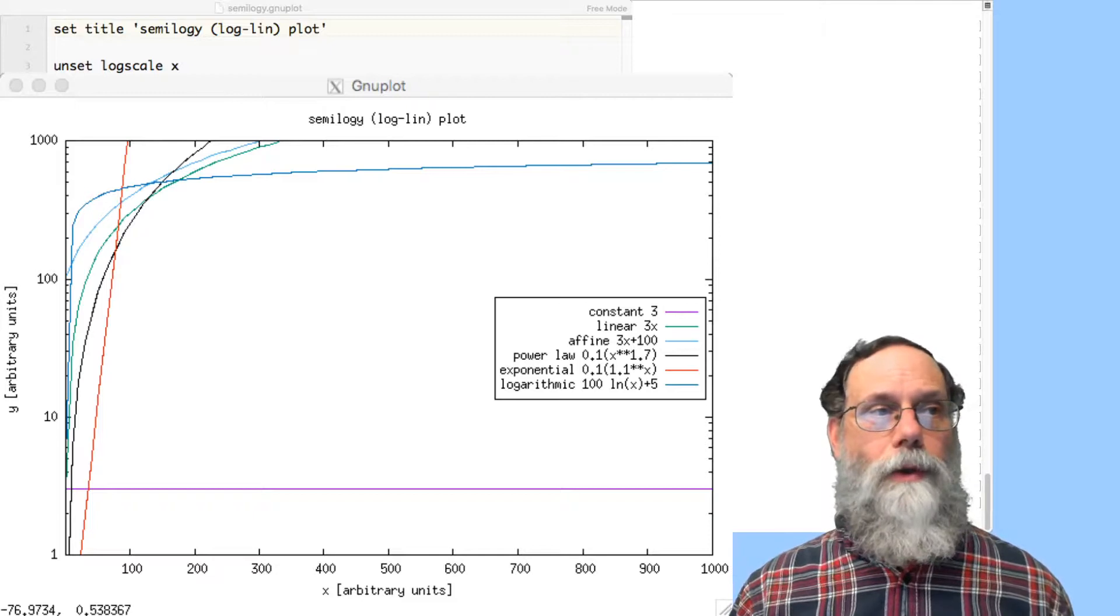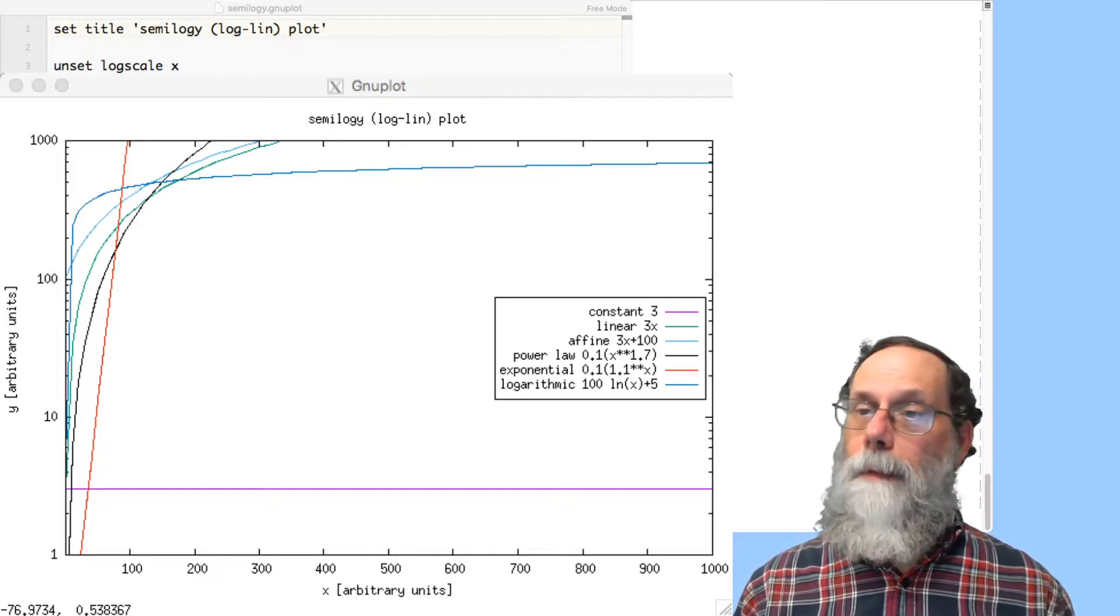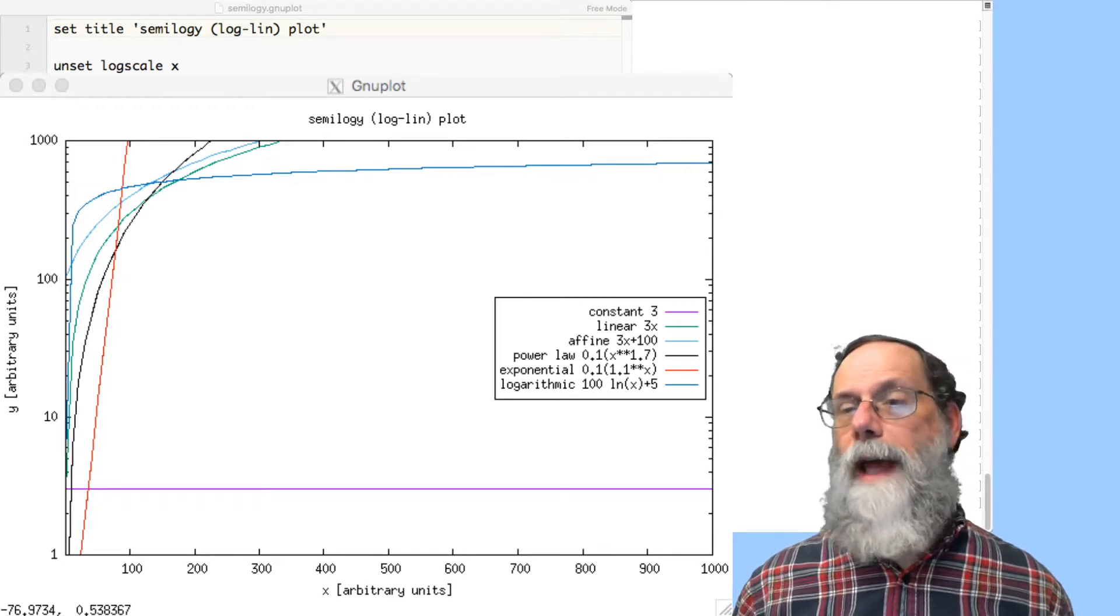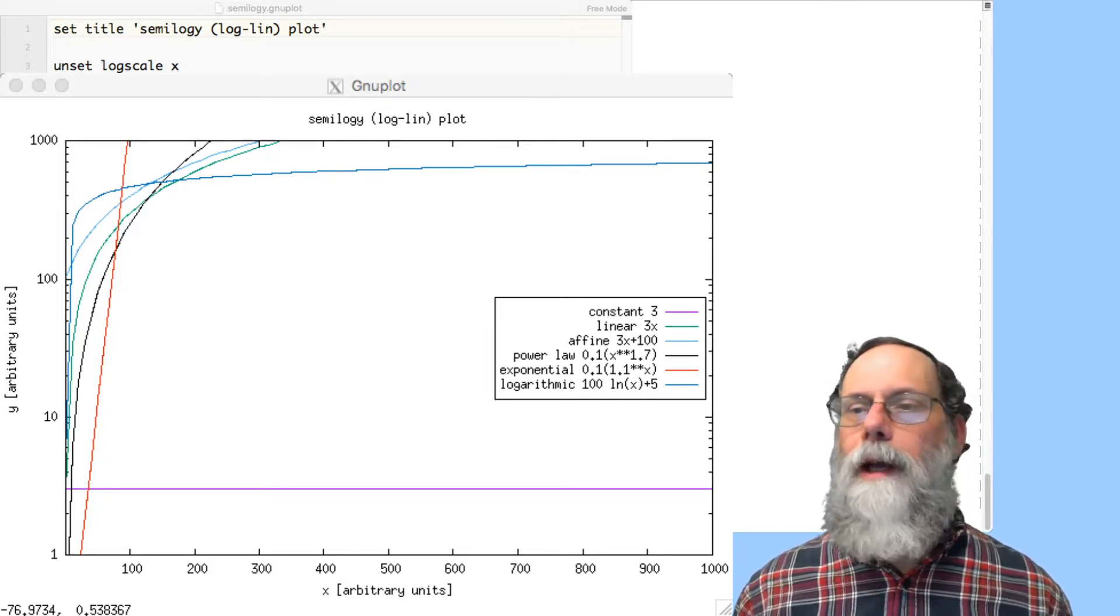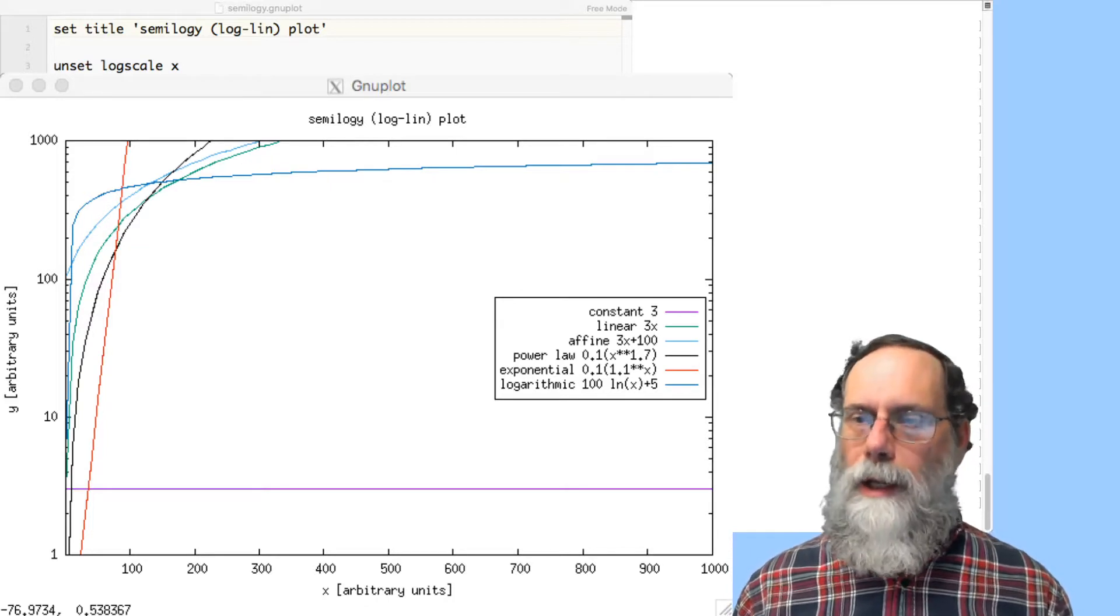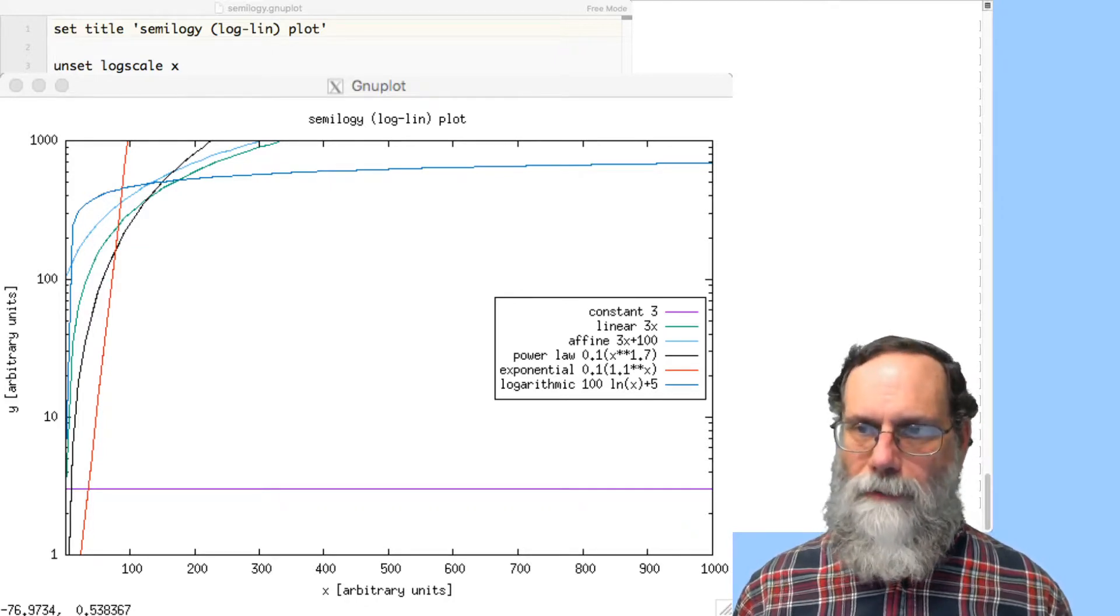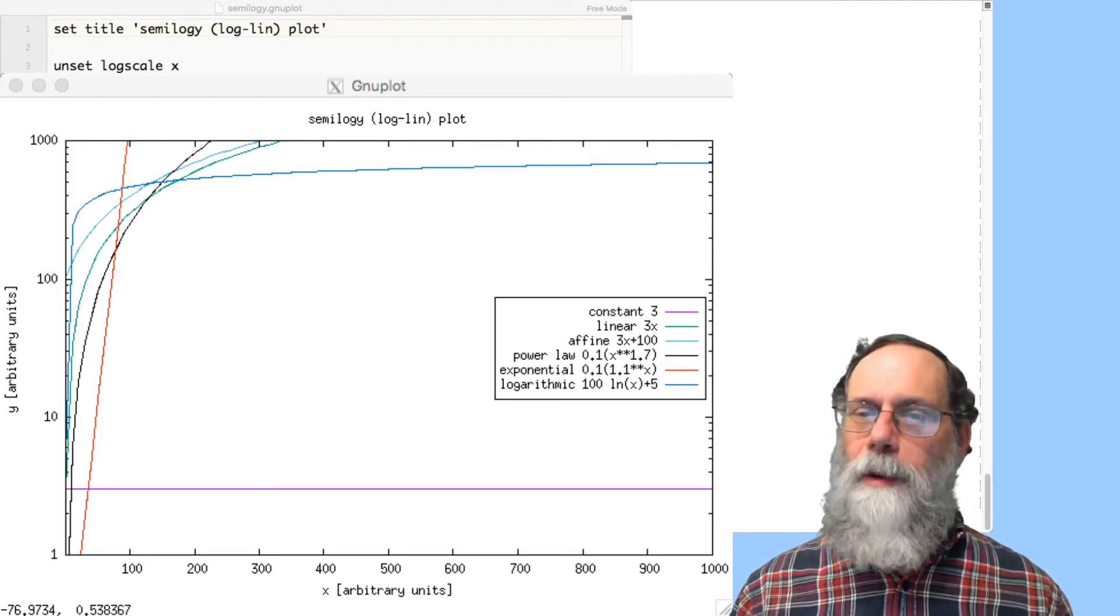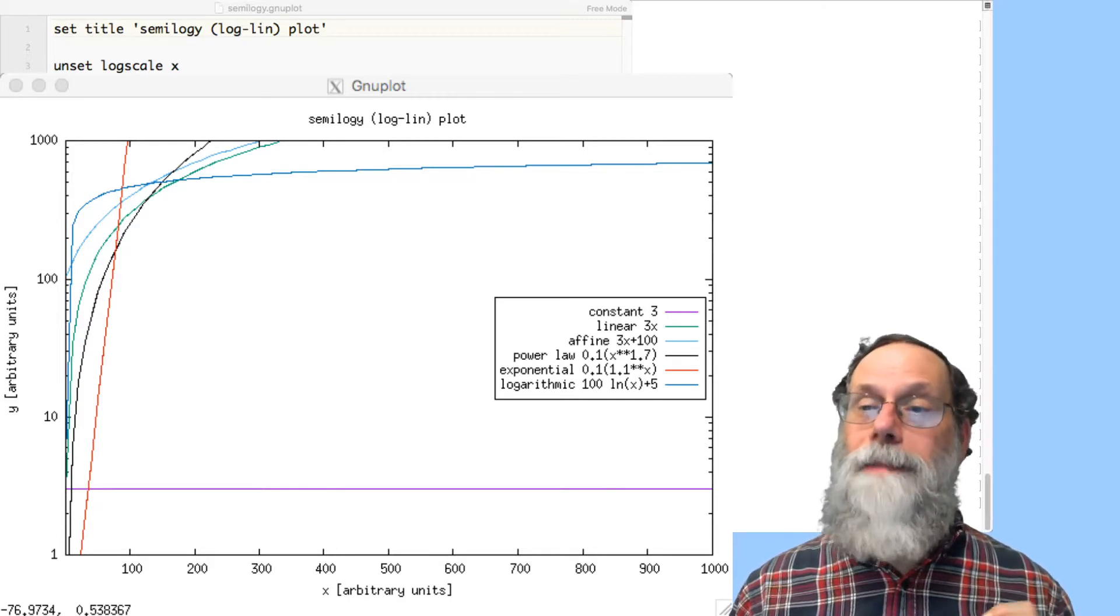So we've looked at linear, log log, semi log x, semi log y. And those are the most common types of axis scaling that you will see. There are a few more specialized ones that you'll see very rarely. In all cases, the idea is to try to make the functions that you're plotting as much like straight lines as you can, because that's all people understand visually. And if you take that as a guiding principle for choosing your axes, you'll end up with much more interpretable, much less misleading plots.